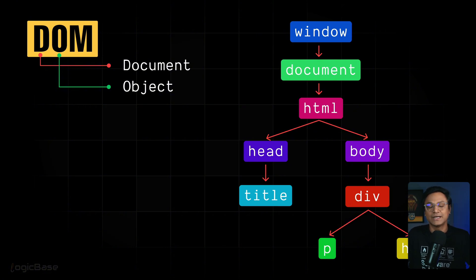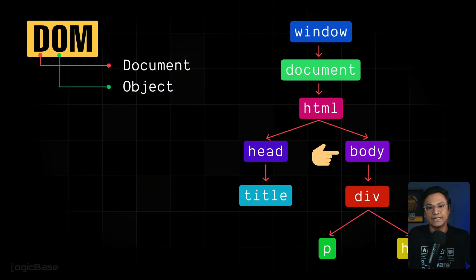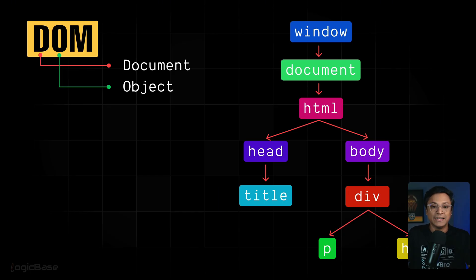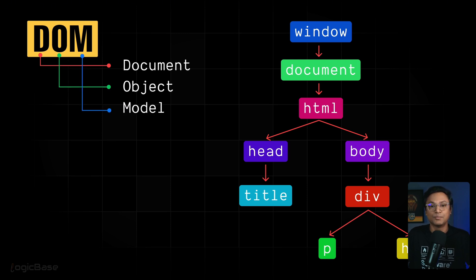So after the window object comes the document and then our HTML which we write using HTML tags. After that comes the head and then the body. Right? Inside the head, we have the title along with many other types of meta information. So based on the example we just saw, we can imagine the tree structure like this. This HTML tree structure that we are visualizing is what we call the tree model. The model of the HTML tree structure. And it's from this word model that the M in DOM comes. Got it?